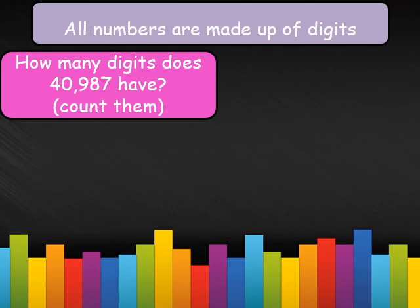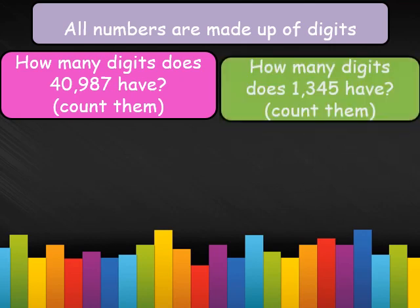Let us see how many digits the number on your screen has. Let us count them: 4, 0, 9, 8, 7. If you count the digits, it is made up of five digits. So we say that the number you see on the screen is a five-digit number.